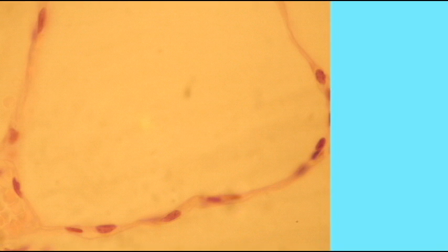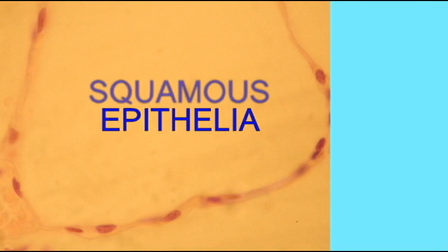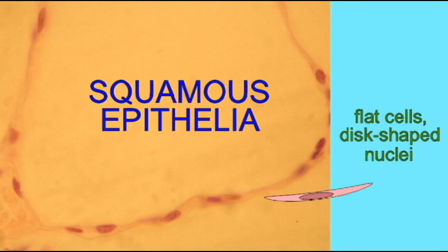This image is of simple squamous epithelia. It can be identified as epithelia because of the spaces around the cells. These are the air sacs of the lungs, and epithelia face the spaces which exit out the body, such as those of the respiratory system. These are squamous cells because of how flat they are.